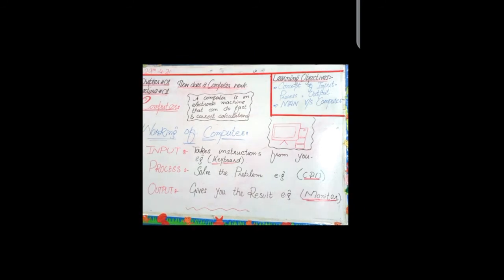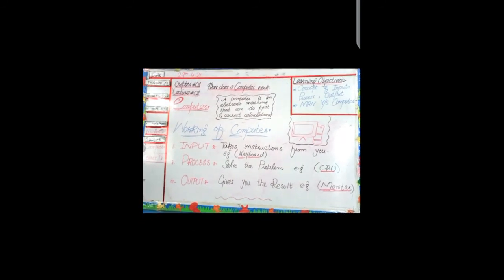This is the example from daily life - we have input, process, and output. For example, you want to watch TV, any entertainment channel or cartoon. You take the remote and press the power on button. That is your input. The TV processes it and you are able to watch it - that is your output.